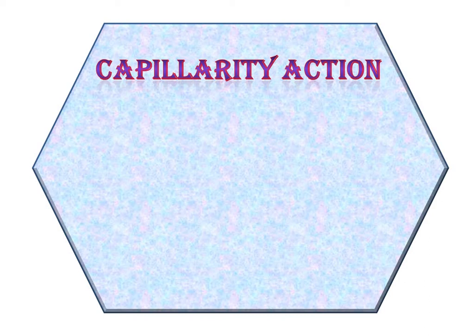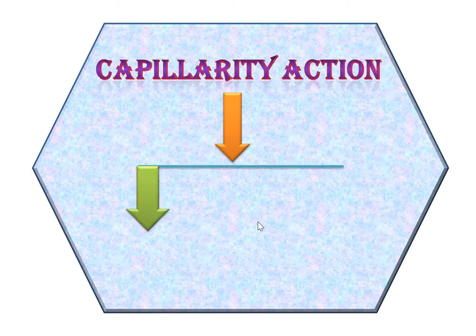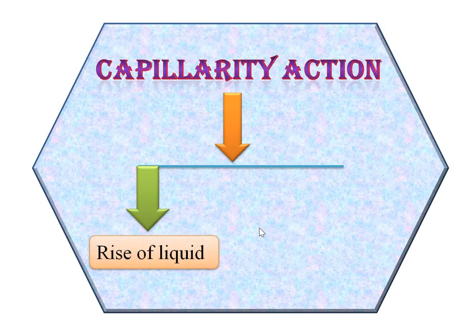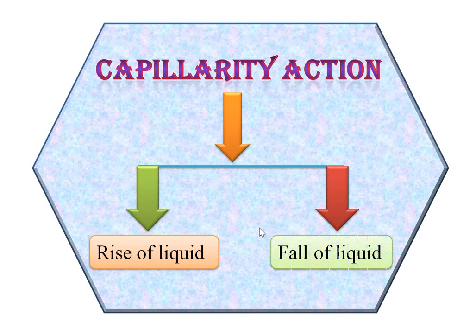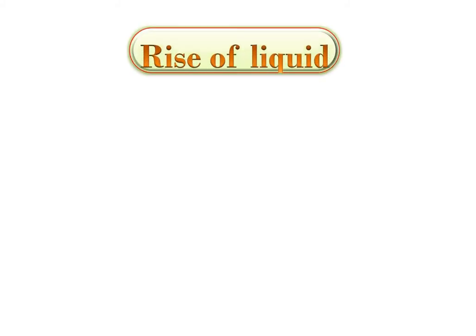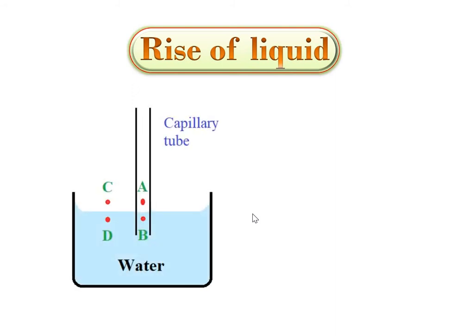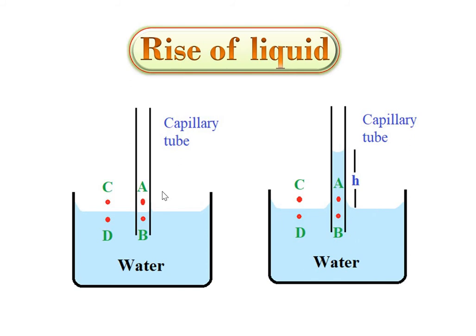When a capillary is dipped in a liquid, two effects can be observed: the rise of a liquid inside the capillary, and the fall of a liquid inside the capillary tube. For the rise of a liquid: when a capillary tube is dipped in a liquid that partially or completely wets the solid, there is capillary rise and the liquid meniscus inside the tube is concave.